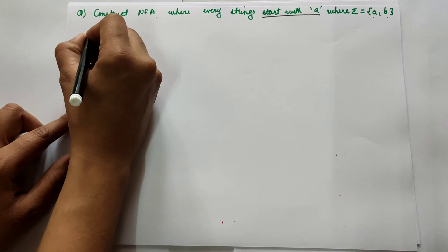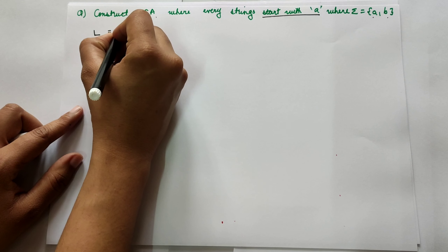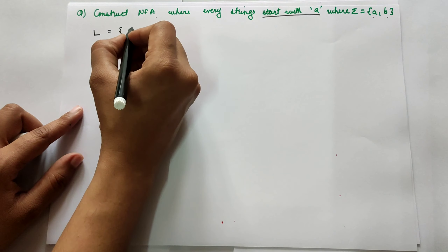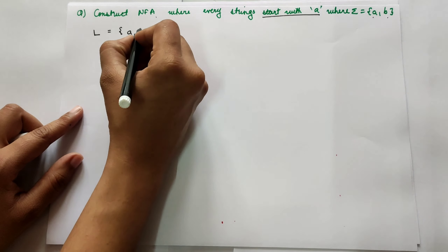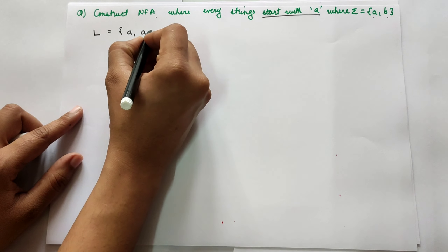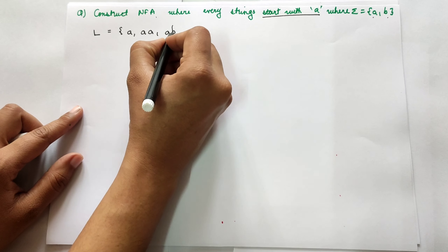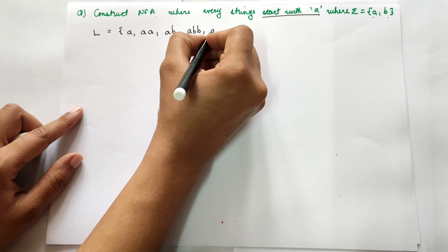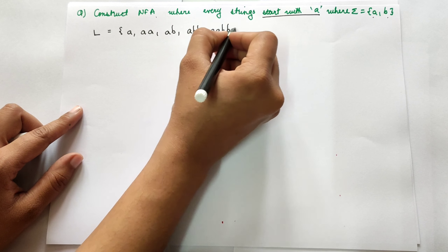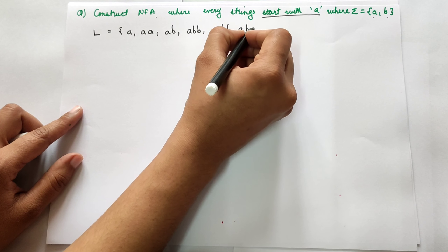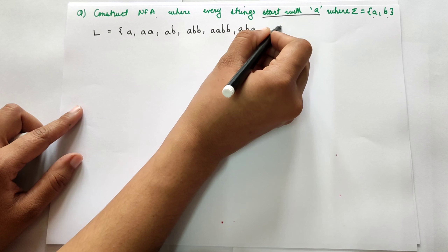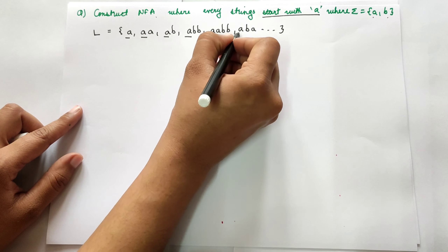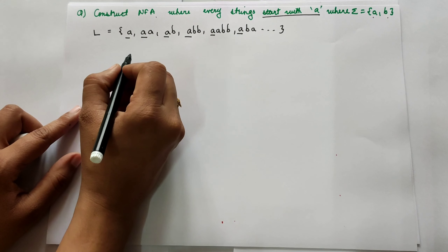First of all, we will try to write down the language for it. What would be the possible strings starting with an A? It can be simply A, AA, AB, ABB, AABB, ABA — it can be anything, but it has to start with A. All strings must start with an A.